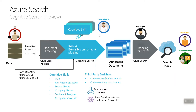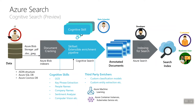The data scientist creates cognitive skills, which means they will apply different types of transformations to data. For example, optical character recognition — when you have an image, you can acquire text from it. If you have text, you can do things like key phrase extraction, detecting people names and company names. You can apply sentiment analysis to detect sentiment, or computer vision to detect what objects are in the image, which allows you to describe different images.